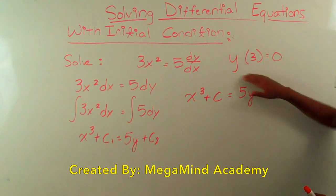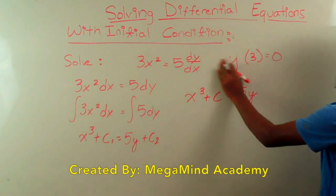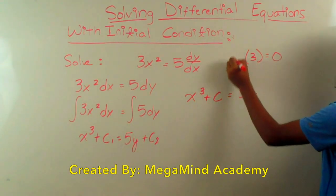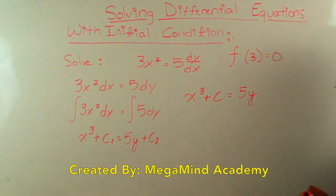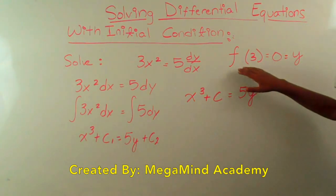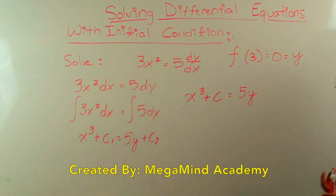So we get, and this should be f of 3, the function of 3 is equal to 0, which is equal to y. So I hope you know that f of x and the y's are the same thing.